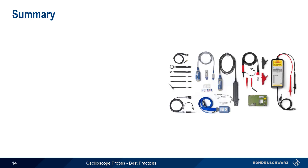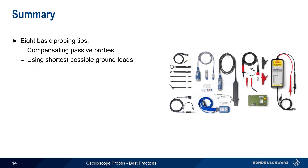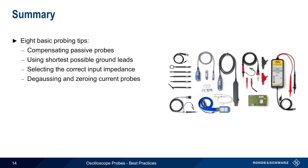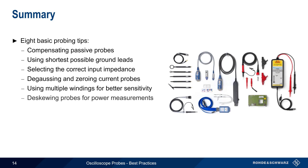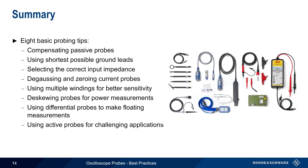In this presentation, we covered eight basic probing tips: compensating passive probes, using the shortest possible ground leads, selecting the correct input impedance, degaussing and zeroing current probes, using multiple windings to increase current measurement sensitivity, de-skewing voltage and current probes for power measurements, using differential probes for floating or non-ground-referenced measurements, and using active probes for more challenging measurement applications. This concludes our presentation, Understanding Oscilloscope Probing Best Practices. If you'd like to learn more about how to use oscilloscopes or oscilloscope probes, please see the links in the video description. Thanks for watching.